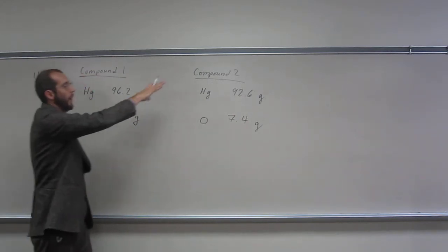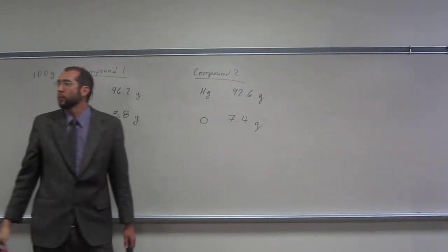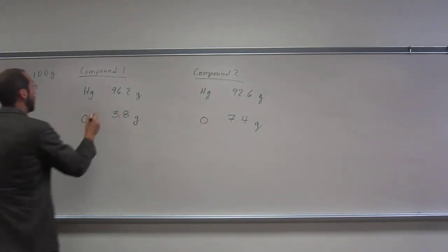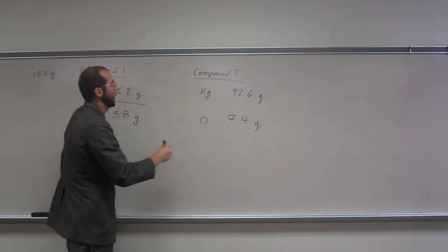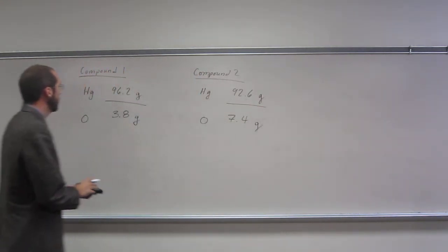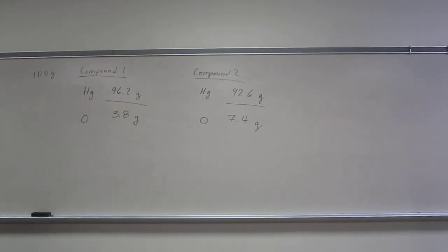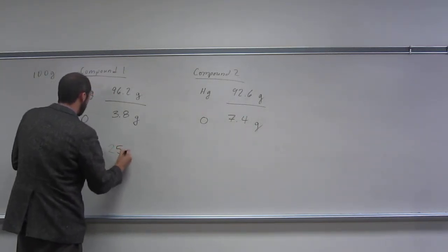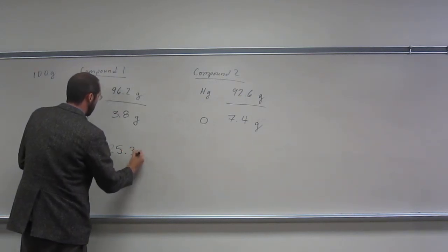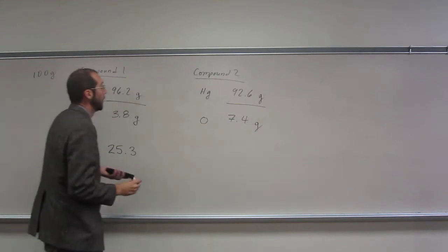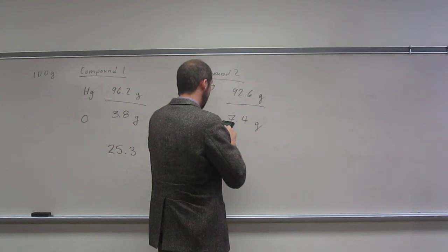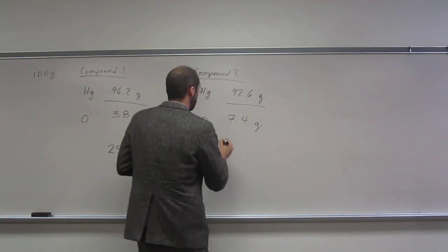I wrote these in this way for a reason because it makes me, or reminds me that I want to divide one by the other once we get to the masses. I like to divide the big one by the small one, like that. So let's see what we get. So 96.2 divided by 3.8 is 25. We'll just take it out to three right now, 25.3, and 92.6 divided by 7.4, 12.5.